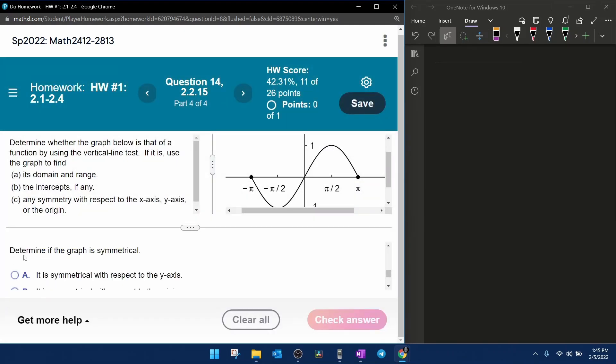Then it says determine if the graph is symmetrical. Now we have some choices here. Is it symmetrical with respect to the y-axis? Well, the y-axis would be fold symmetry, meaning that this curve going up would have to fold over and be repeated over here, which it's not. So this does not have y-axis symmetry.